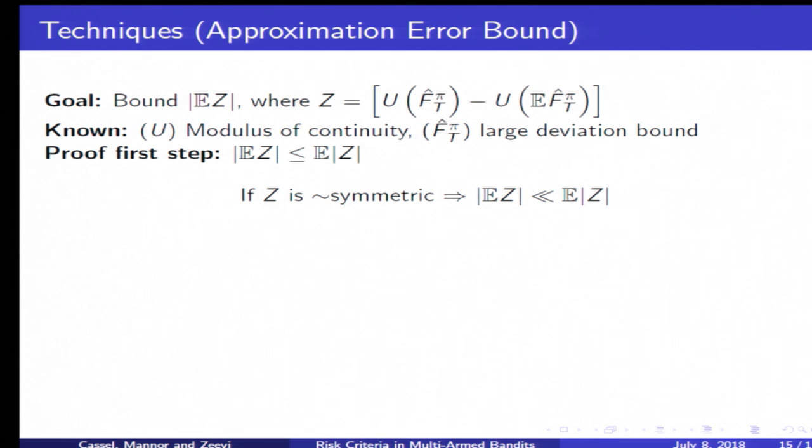If we only have these two assumptions in tow, a rather inevitable first step is to use the triangle inequality to put the absolute value into the expectation. Unfortunately, when the random variable Z is rather symmetric in the proximity of zero—its distribution that is—then this transition is rather loose. If we do this, we only achieve the order root T over T for the approximation error.